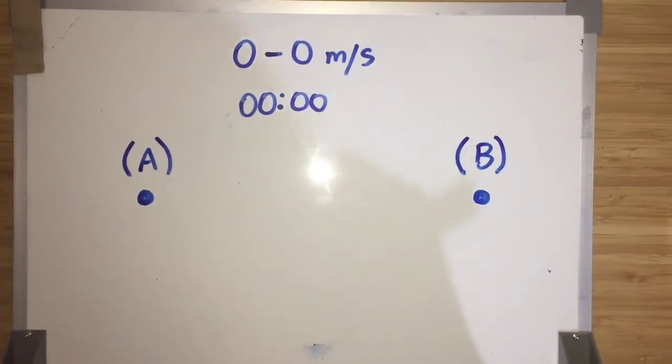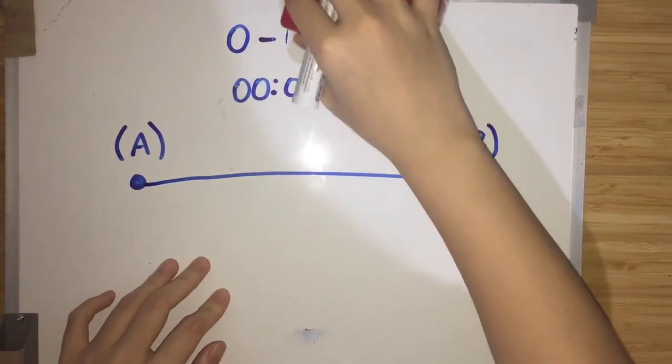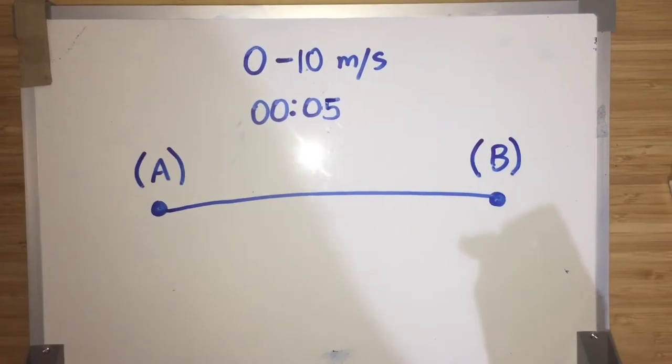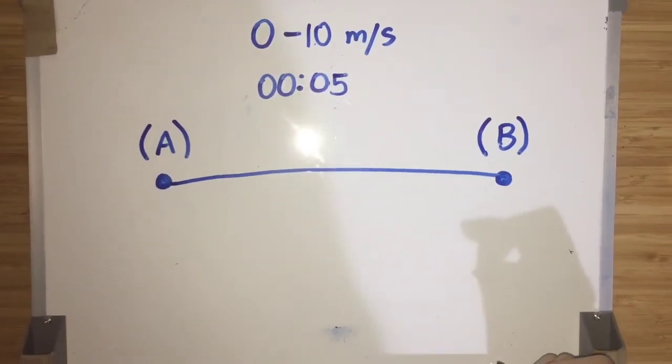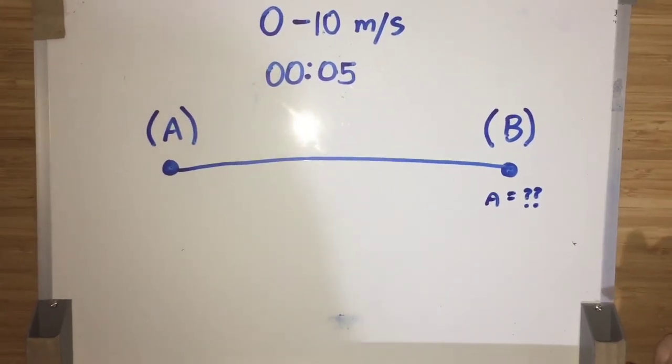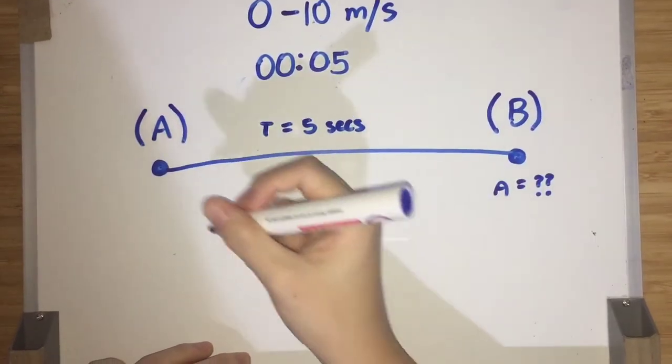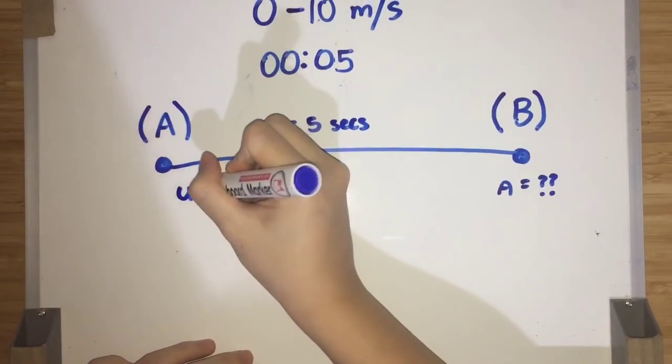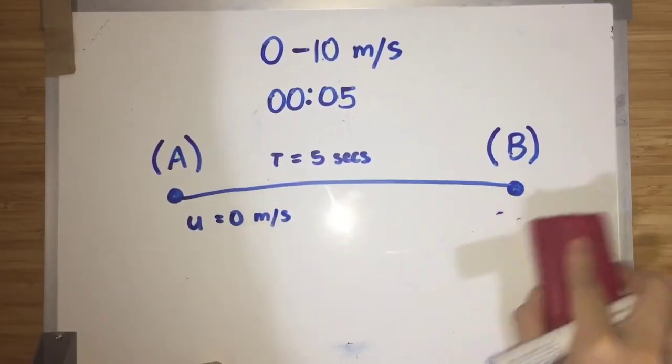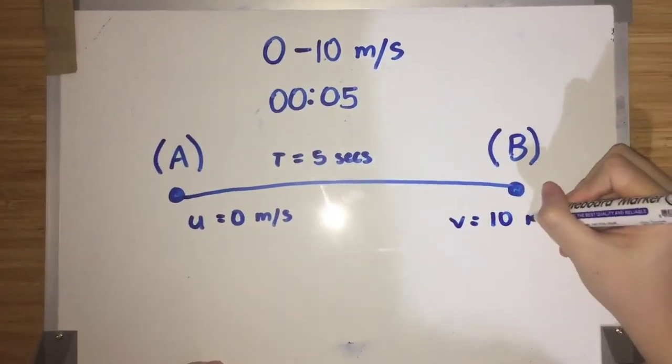Suppose an object is initially at rest at point A, then it moves to point B with a velocity of 10 meters per second in 5 seconds. Now we have to find the acceleration at point B. To do so, we list the time taken, which is t equals 5 seconds. Then we list the initial velocity, which is u equals 0 meters per second. Lastly, the final velocity, which is v equals 10 meters per second.